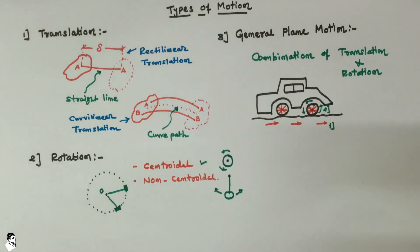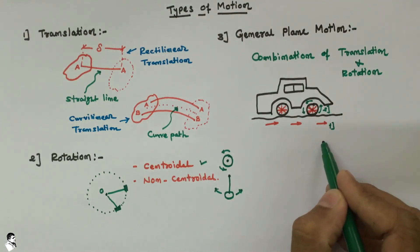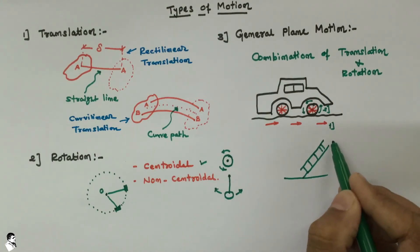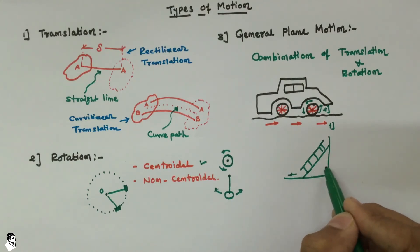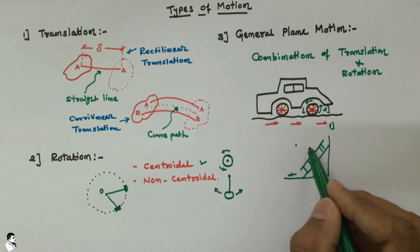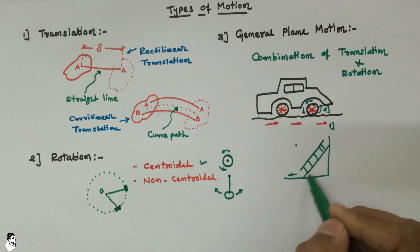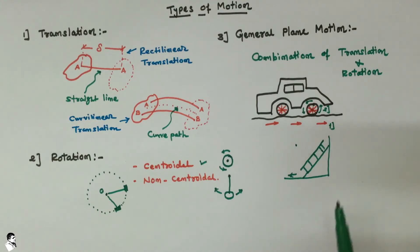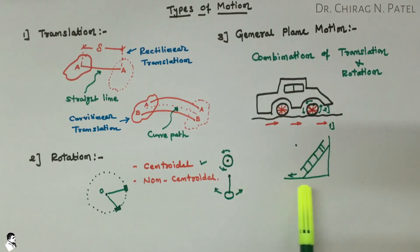Another example is the slipping of a ladder from its position. If we draw a ladder and it slips from its original position, it has some fixed origin from which it will rotate to some position and also translate. So the particles of that ladder are affected by both types of combined motion, making it also an example of general plane motion.